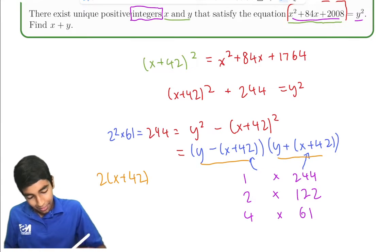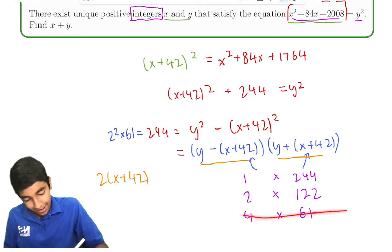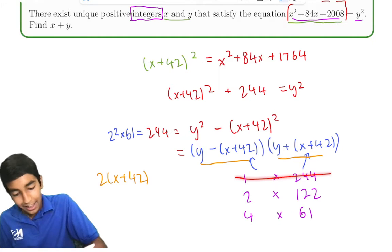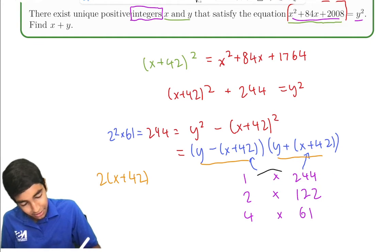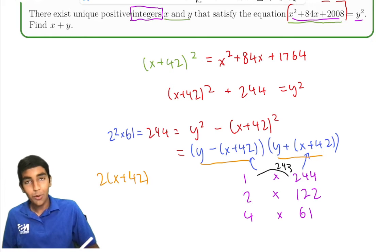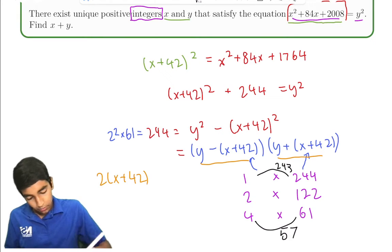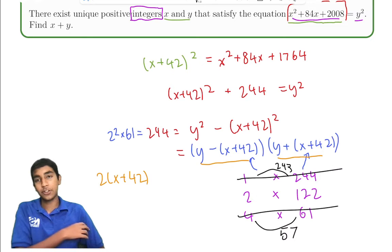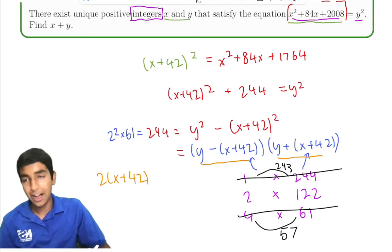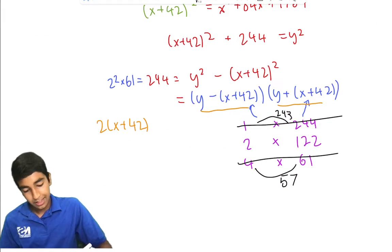So that means these two numbers are different only by an even number. So what does that mean? That means this possibility can't work, and this possibility can't work, because this one has a difference that's an odd number, and this one also has a difference that's an odd number. So you can say goodbye to those expressions. They don't work. They don't have good parity.